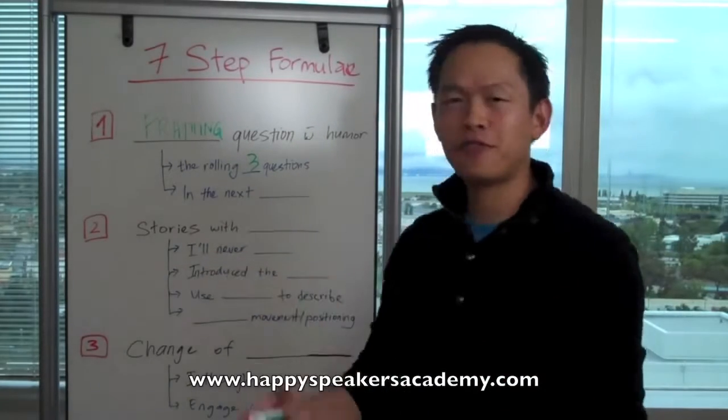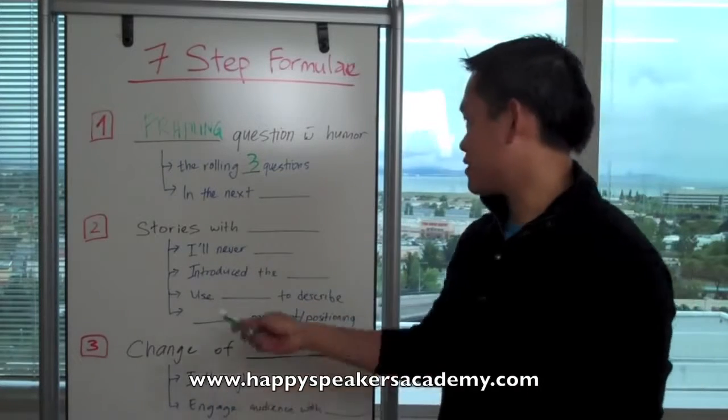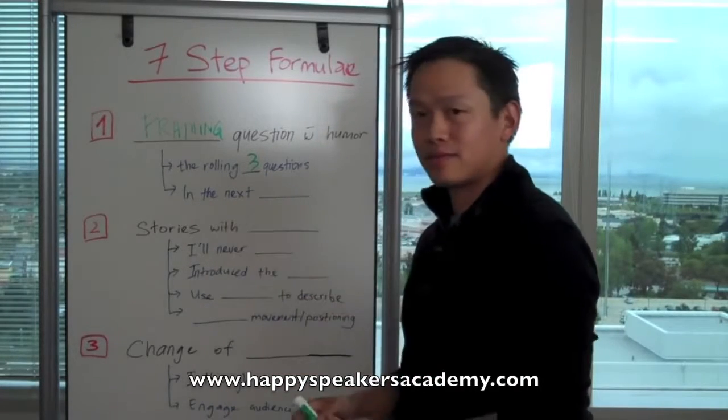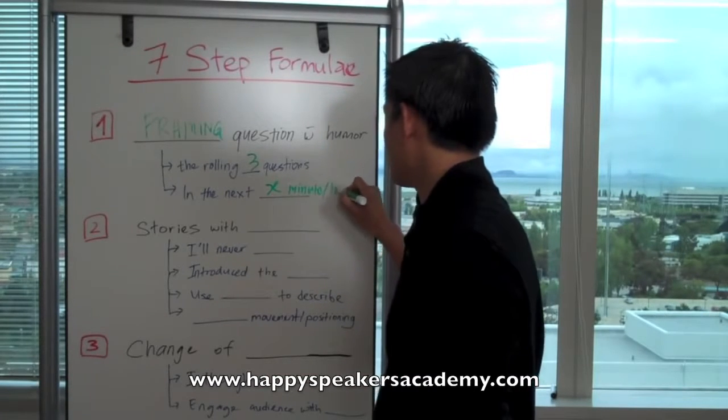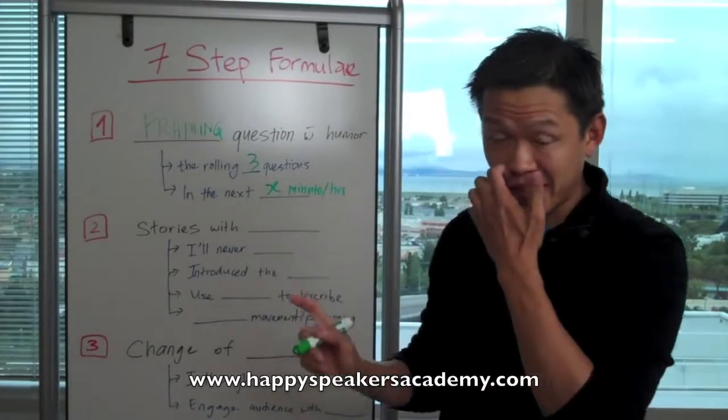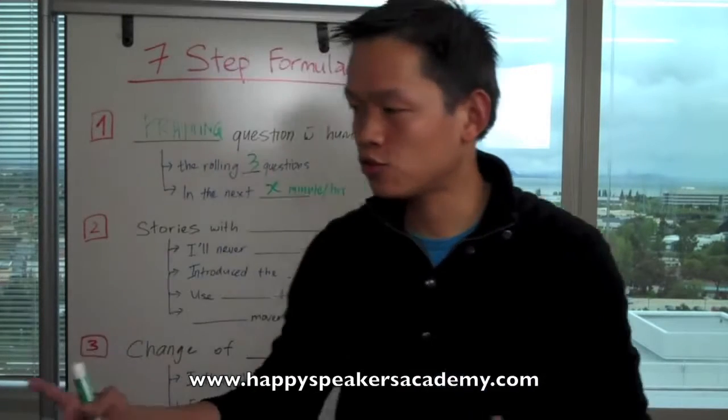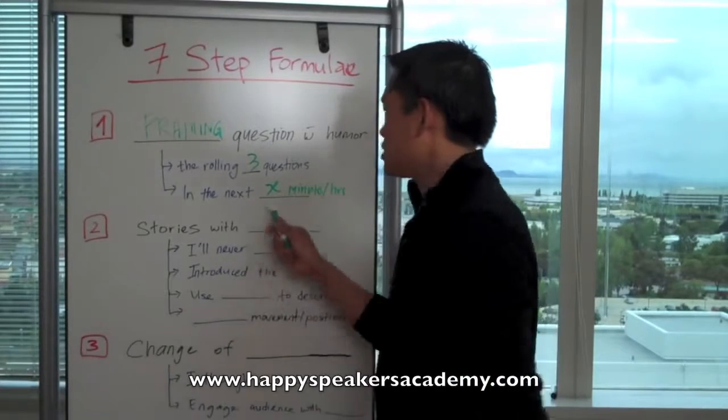And then, how do you frame them? The next thing you want to say is, in the next X minutes or hours. You need to be specific. So, after I ask the three questions, the rolling three questions, the next thing that I want to say is, then, in the next 8 minutes and 45 seconds, you will realize that whether you raise your hand or you don't, you are in some sort of trading business. You see, three questions followed by this. This, you have to be specific.